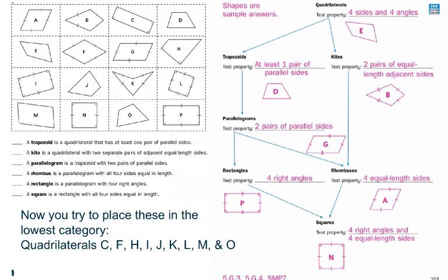So I want you to see if you can place these that have not been placed yet. So quadrilateral C. If I'm looking at that, I'm starting at the top and I'm saying, okay, so does it fit as a quadrilateral? Well, yes, it has four sides and four angles. If I come down the kite side, does it have two pairs of equal length adjacent sides? Two pair of adjacent equal length. Oh, it doesn't. So it's not going to go over here, right?